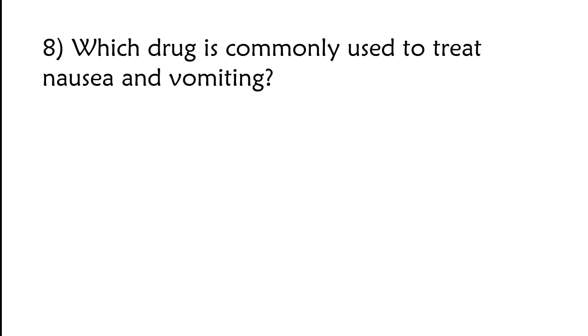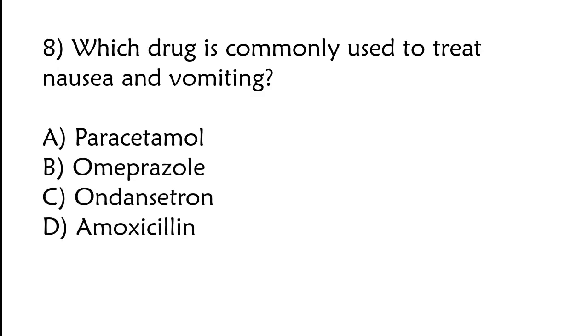Which drug is commonly used to treat nausea and vomiting? Paracetamol, omeprazole, ondansetron, amoxicillin. The correct answer is option C. Ondansetron drug is commonly used to treat nausea and vomiting.